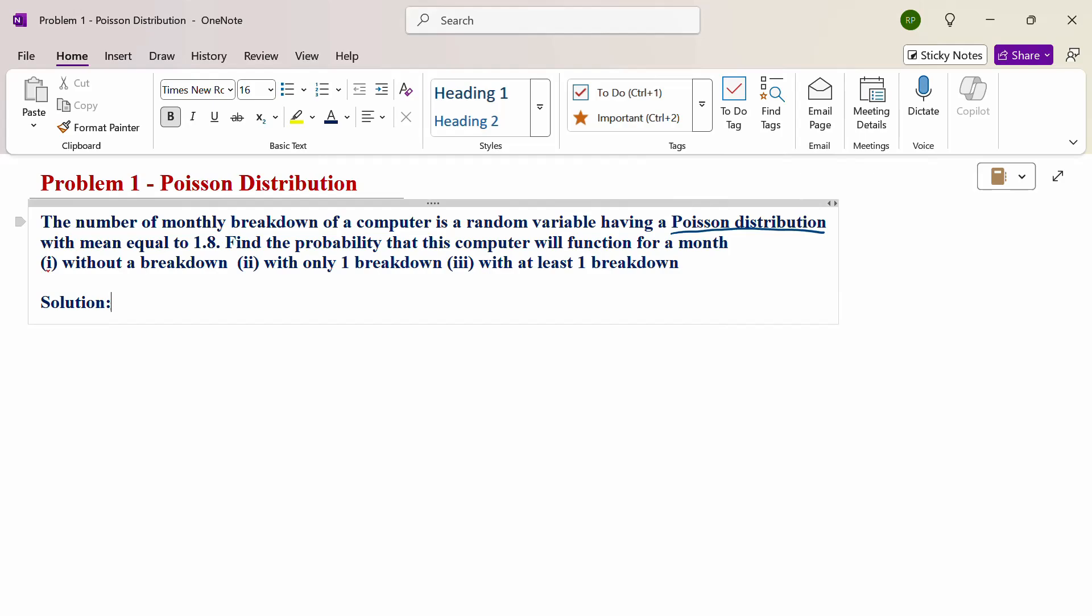First of all, the problem directly mentions Poisson distribution. Some problems don't mention it directly. In this situation, read the problem and then check if the given problem is discrete or continuous. Discrete means finite number of values or countably infinite number of values. Continuous means interval. This problem is number of monthly breakdowns. Number is involved. Number means finite or countably infinite. Therefore, the given problem is discrete.